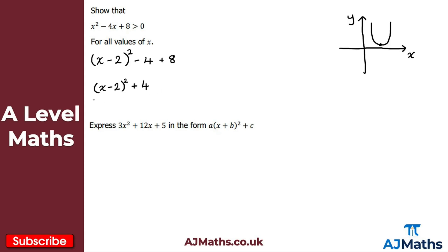So we've got it in completed square form. We can now see the minimum turning point. The minimum point is given by our completed square form: multiplying the bracket value by minus 1 gives us the x-coordinate, so the x-coordinate is positive 2. The y-coordinate is just the constant at the end, which is 4. So our minimum point is (2, 4), which matches our diagram.